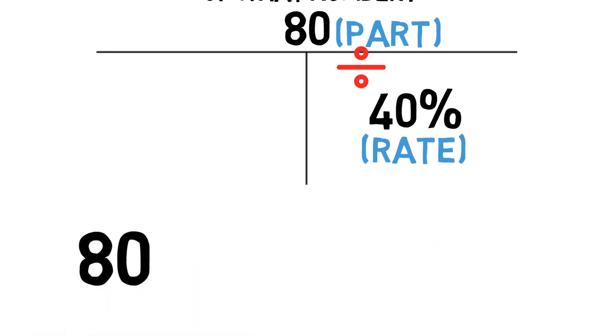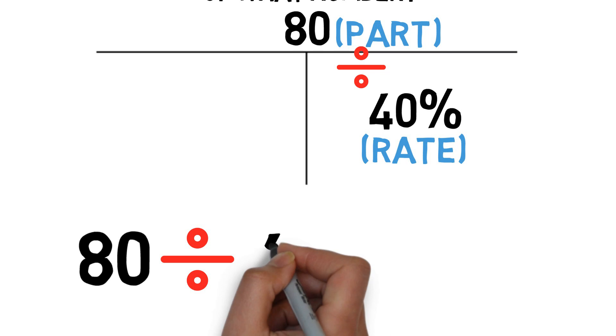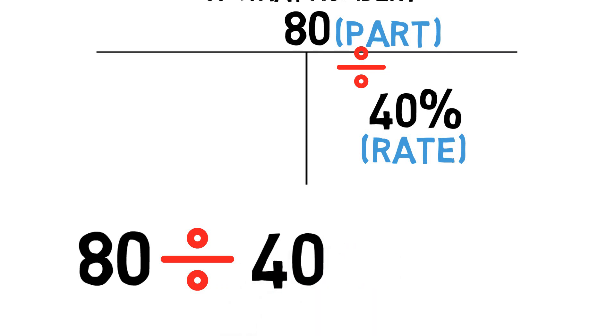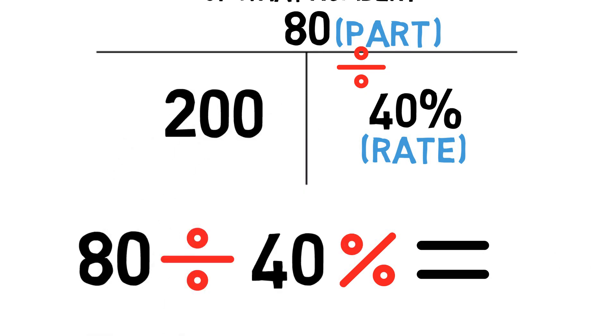So we would take 80, then hit divided by, then hit the number 40, then hit your percent key, and then equals if necessary, and the whole amount will be 200. Our answer would be 200.